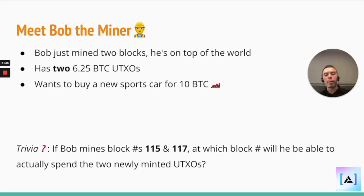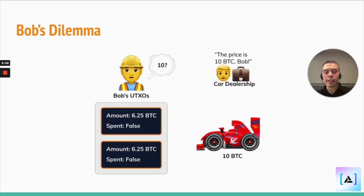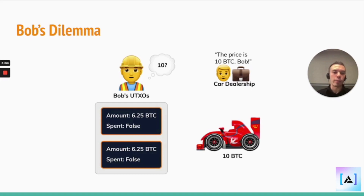Say Bob wants to buy a new sports car for 10 Bitcoin. So Bob approaches the dealership and the car dealership says, 'Hey, the price is 10 Bitcoin, Bob.'